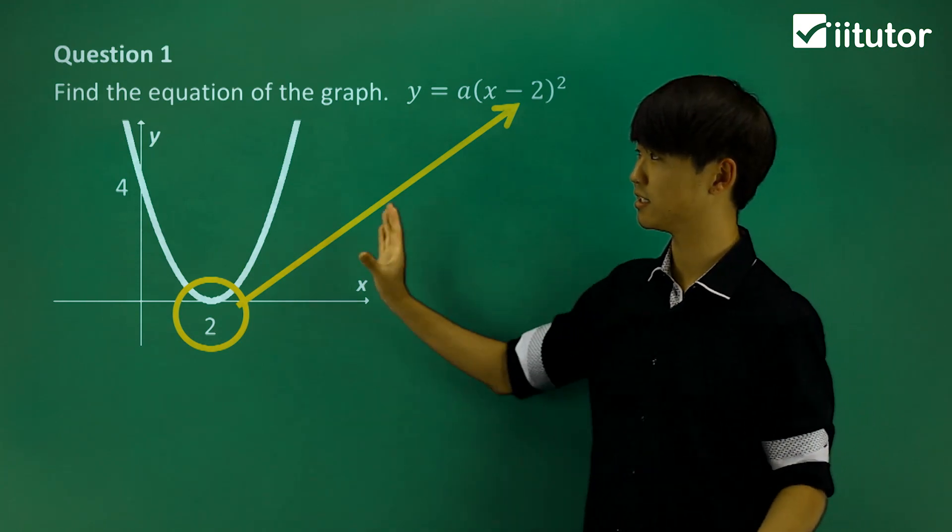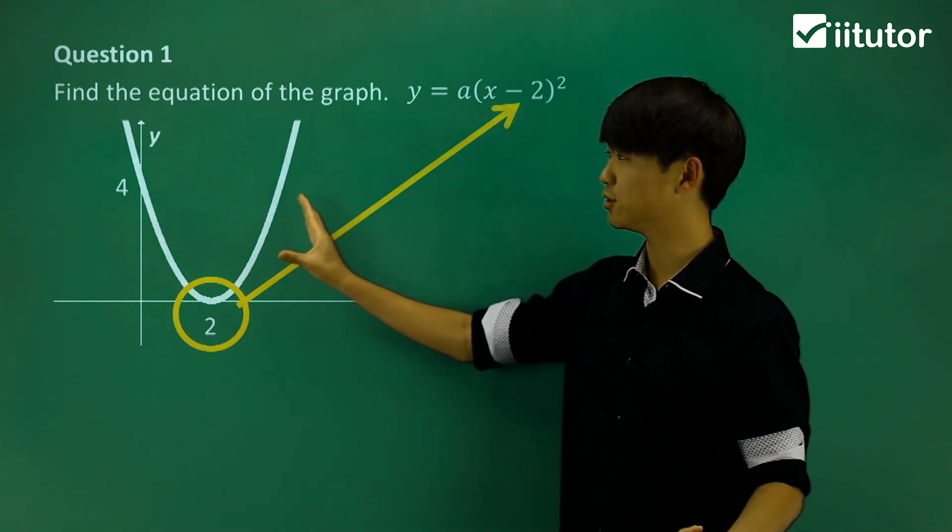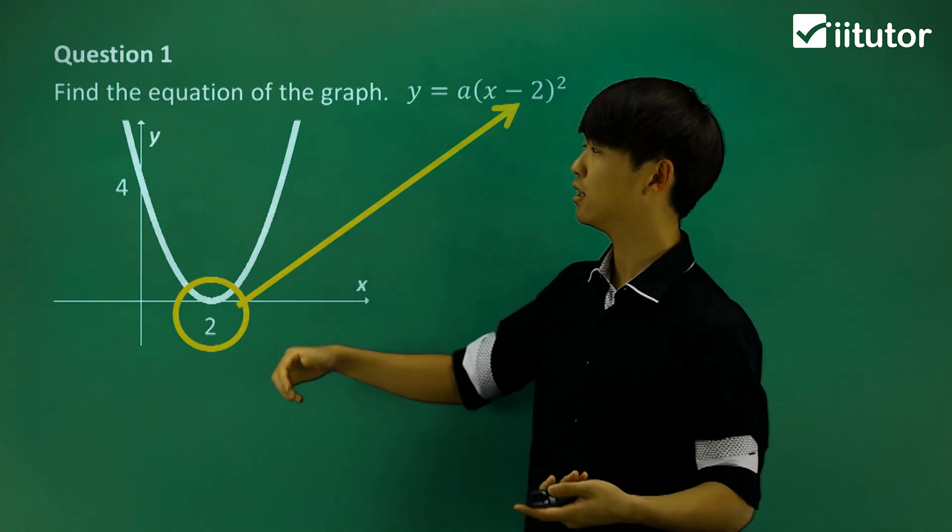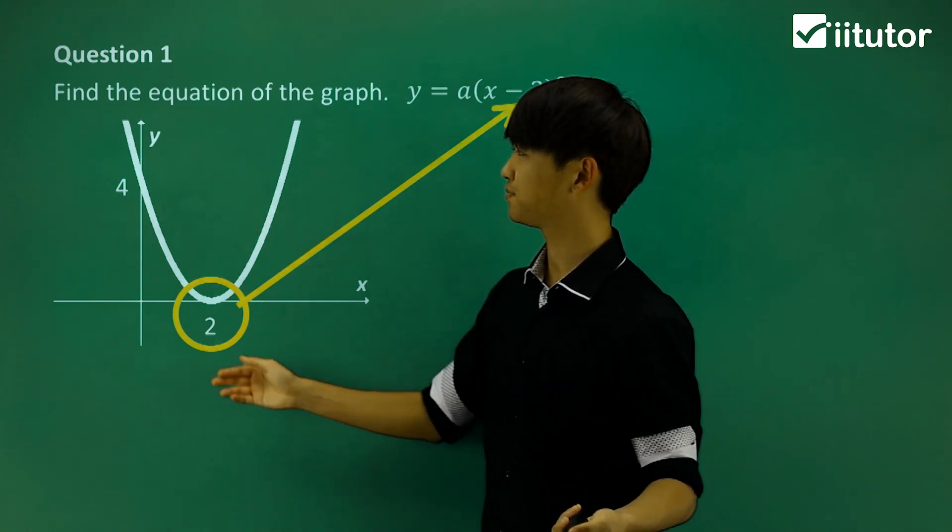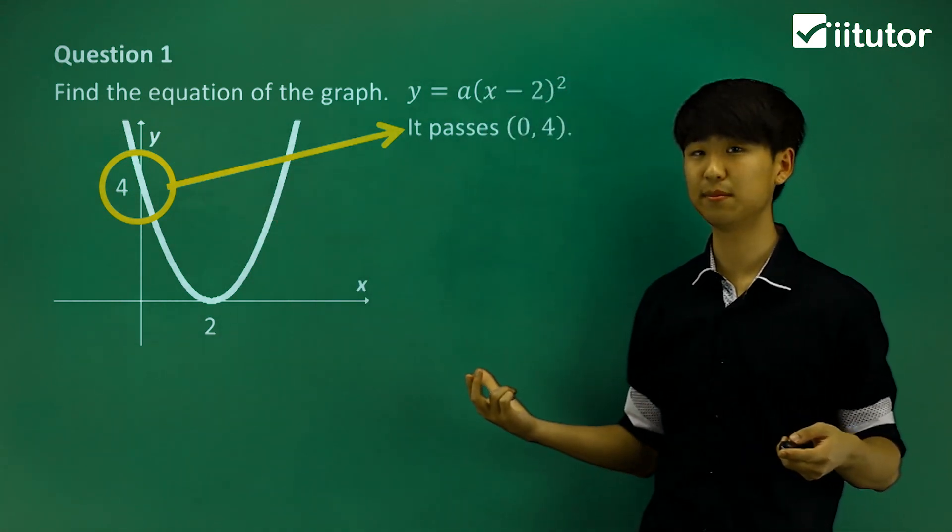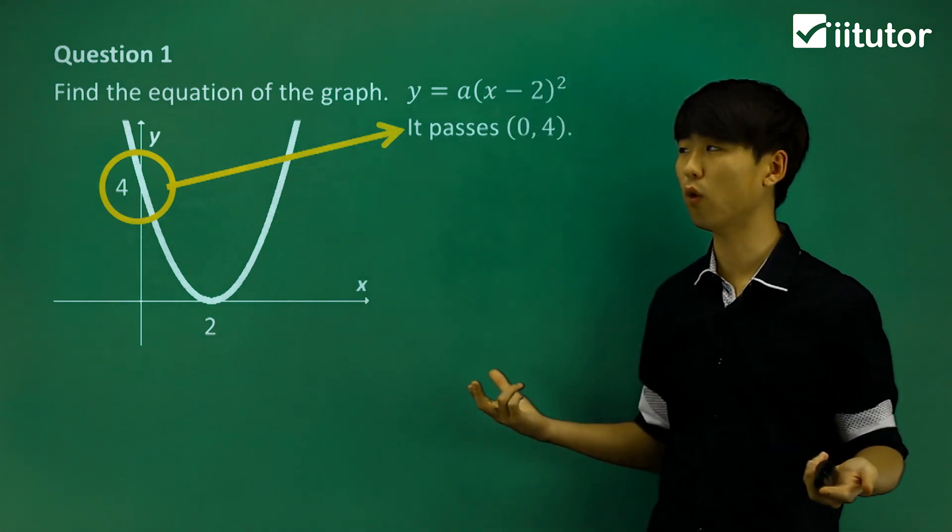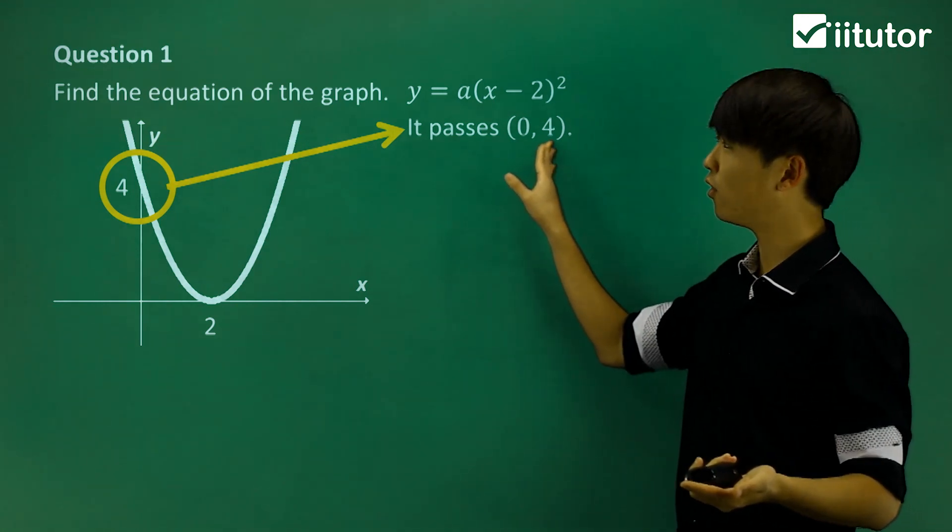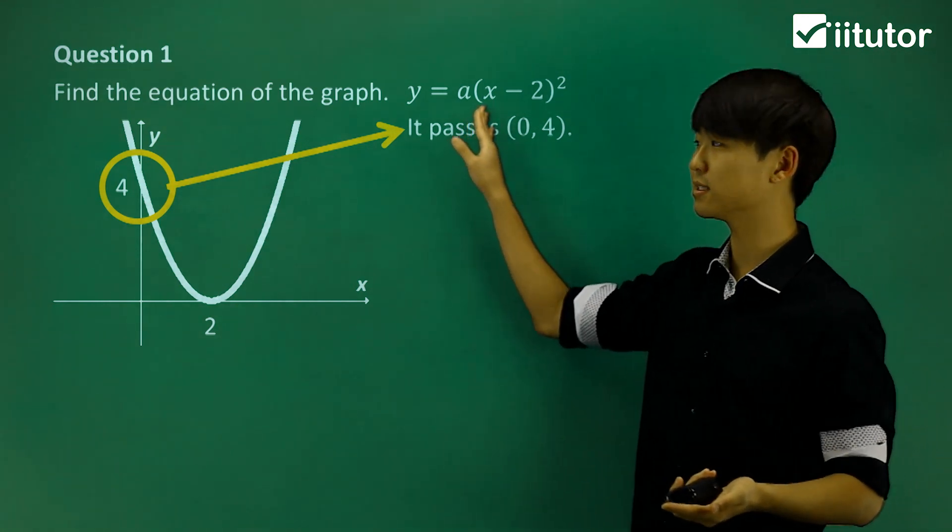So to determine that it's this shape, we're going to substitute a specific point on this graph. Now to do that, what point do we know on this graph? We can see here there's a y-intercept, which is the point (0, 4). So we're going to substitute the point (0, 4) into this equation because it lies on this graph.